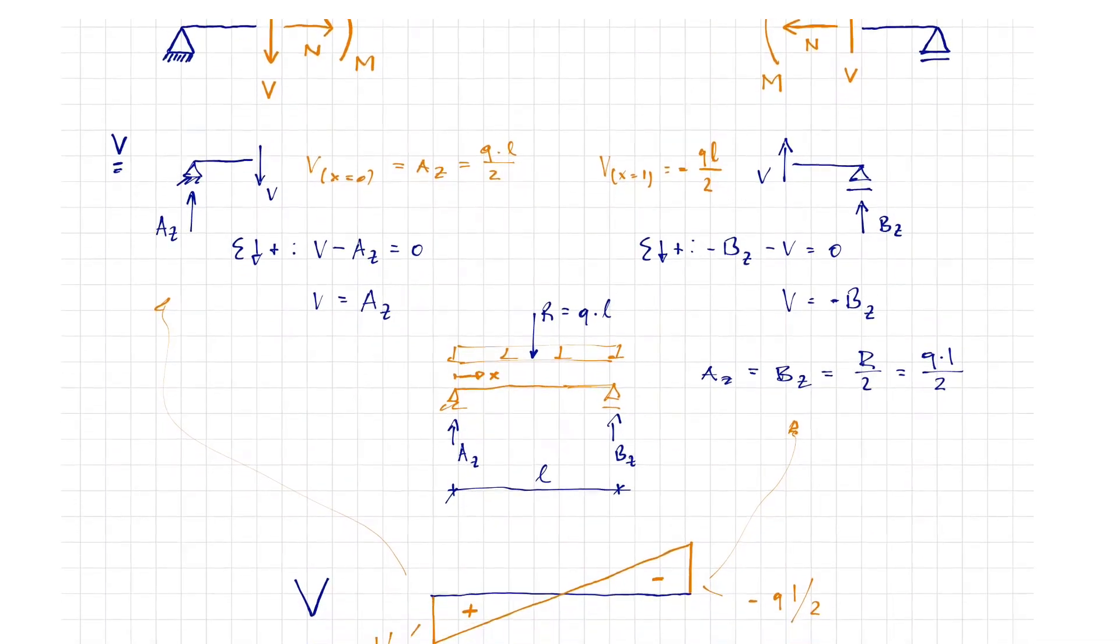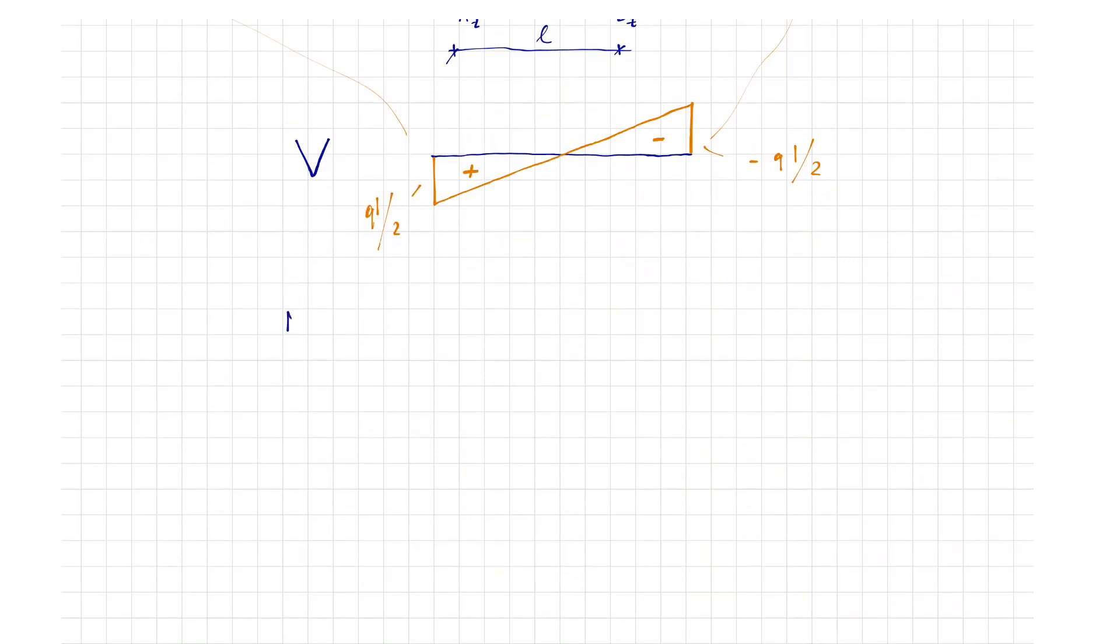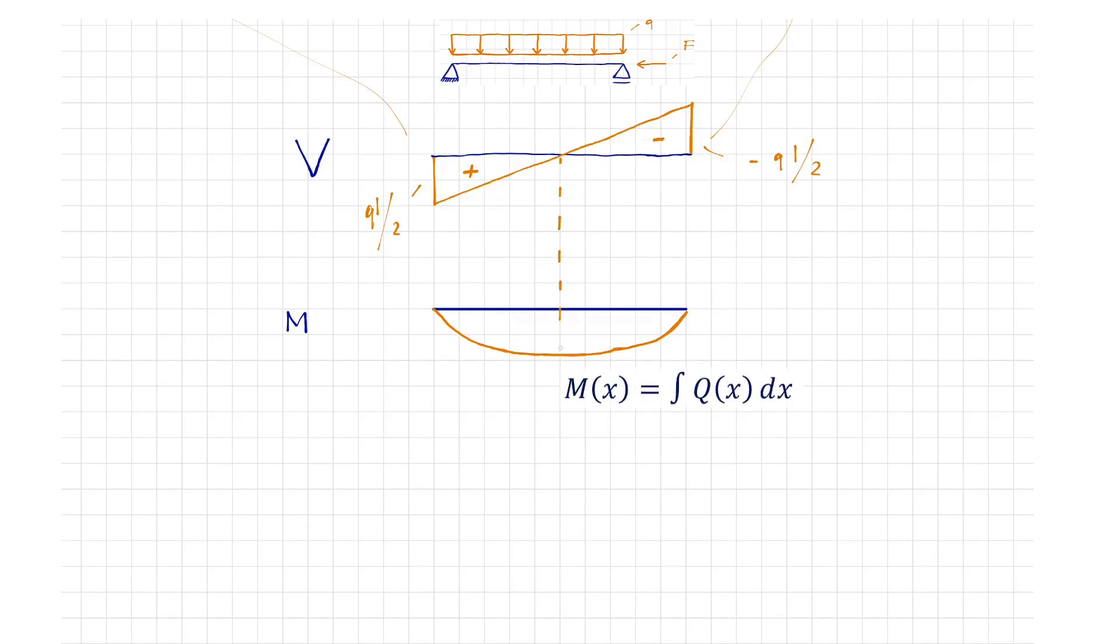Here you can see the already determined shear force distribution. Afterwards, you can quickly determine the moment distribution. It reaches the maximum in the zero crossing of the shear force distribution because the moment is the antiderivative of the shear force. The shear force is again the antiderivative of the line load, but with a negative sign.